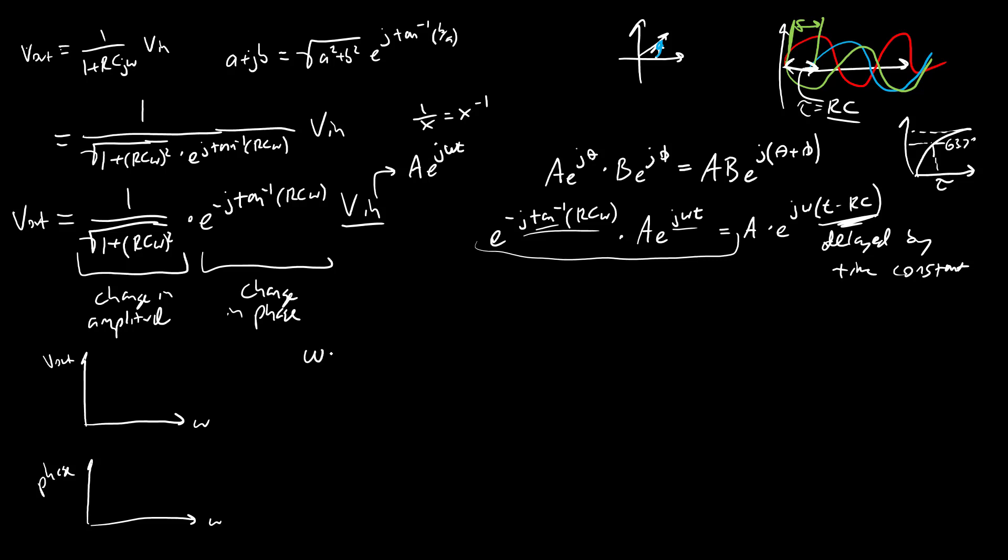And just kind of looking at the amplitude part in the fraction here, we see omega is down there in the denominator. So when omega goes to zero, this whole term is going to cancel out, we're just going to get one over one. So when frequency is zero, our output is just going to be equal to our input. And as omega gets bigger and bigger, the denominator is going to go to infinity, and this fraction is going to go to zero.